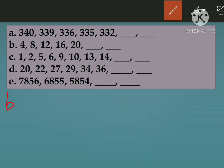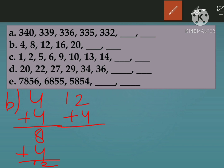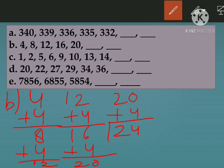Part B series is: 4, 8, 12, 16, 20 — next two to fill. This is the table of 4. You add 4 each time: 4+4=8, 8+4=12, 12+4=16, 16+4=20. Now add 4 to 20 to get 24, and add 4 again to get 28. Your answers are 24 and 28.